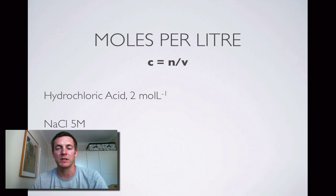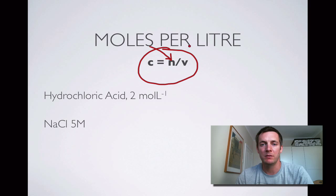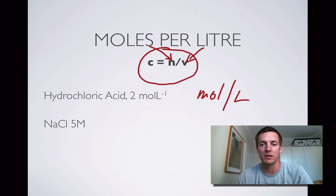Moving on to moles per liter — by far the most commonly used unit. Concentration equals the number of moles (symbol n) divided by the volume. You can see this from the unit: moles per liter means moles divided by volume. Hydrochloric acid at a concentration of 2 moles per liter can also be written as mol/L. Sometimes you'll see the notation 5 M sodium chloride — capital M is just an abbreviation for moles per liter.